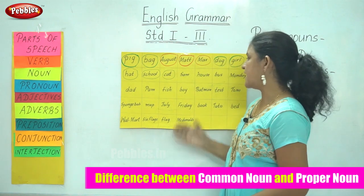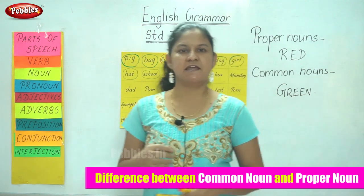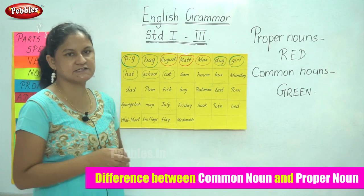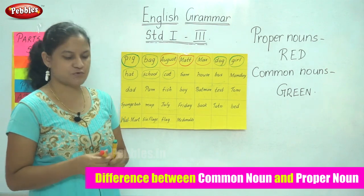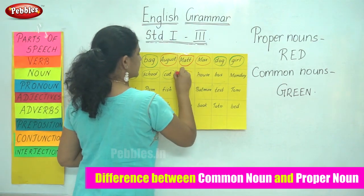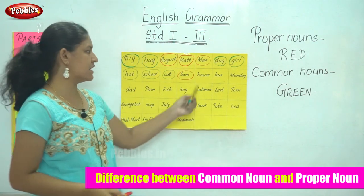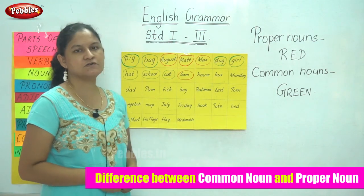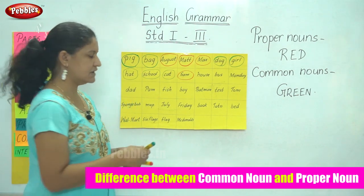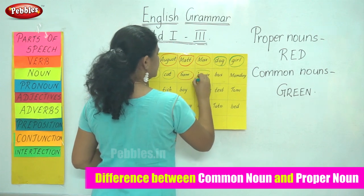The next word is Sam. Sam is the name of a specific person, it starts with a capital letter, and is a proper noun. So I use my red to circle the word Sam. The next word is house. House is the place where we live and it is a common noun, so I circle the word house in green.